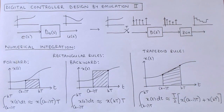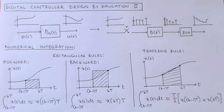We will consider two simple integration rules: rectangular rules and the trapezoid rule. There are two variations of the rectangular rule: the forward rectangular rule, also known as Euler's rule, and the backward rectangular rule.